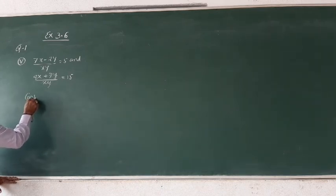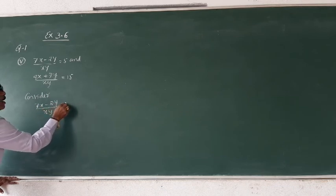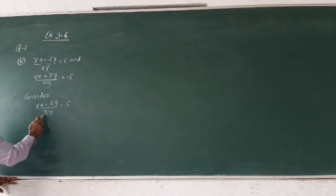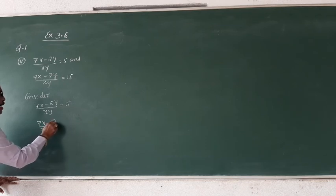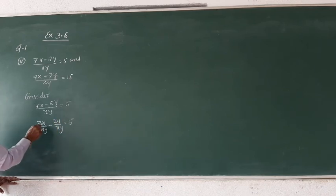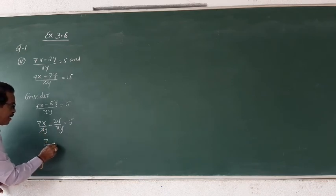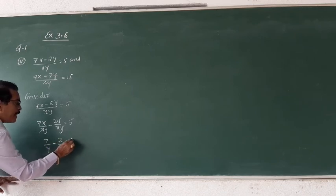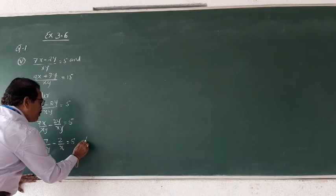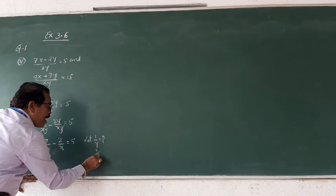Consider 7x minus 2y divided by xy equals to 5. This xy will apply to both terms, so 7x divided by xy minus 2y divided by xy equals to 5. x cancels, y cancels. This becomes 7 by y minus 2 by x equals to 5. Now let 1 by y equals to p and 1 by x equals to q.